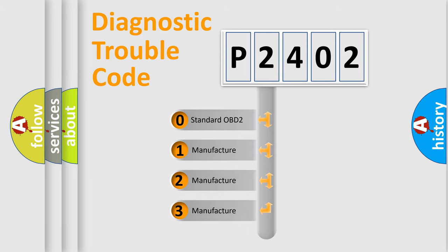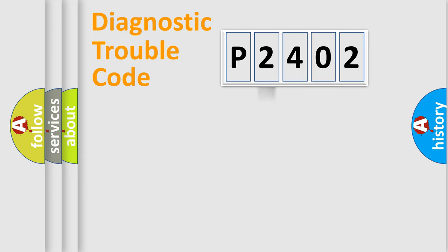If the second character is expressed as zero, it is a standardized error. In the case of numbers 1, 2, or 3, it is a more prestigious expression of the car-specific error.